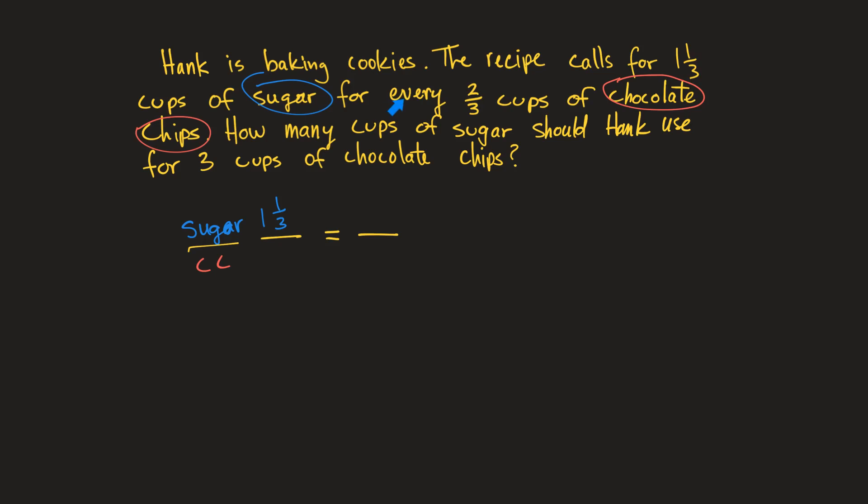Next, for every two-thirds cups of chocolate chips. So two-thirds is going to go right there. And I'll write that in red. Let's see how many cups of sugar, so that's going to be an X right there. Three cups of sugar should Hank use for three cups of chocolate chips. So three is right there because that's the chocolate chips.